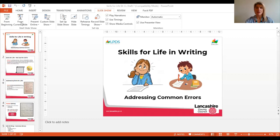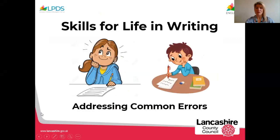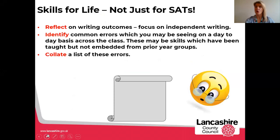What we're talking about here are our skills for life in writing. At the point of marking, we want to reflect on the writing outcomes of your class, focusing on those independent writing outcomes. Then we want to identify common errors which you may be seeing on a day-to-day basis across the class. These may be skills which have been taught in previous year groups, but we're still finding that children haven't got those skills and knowledge secure — they're still making errors with them. We're then going to collate a list of these errors.